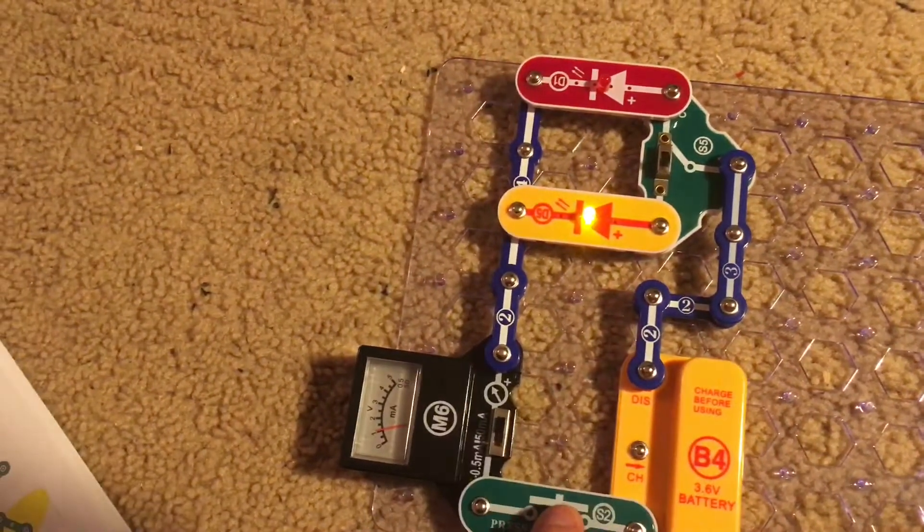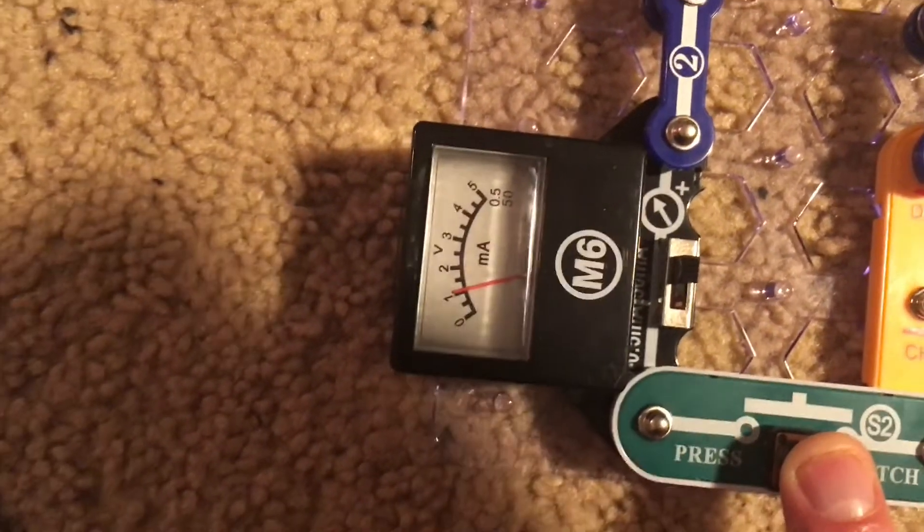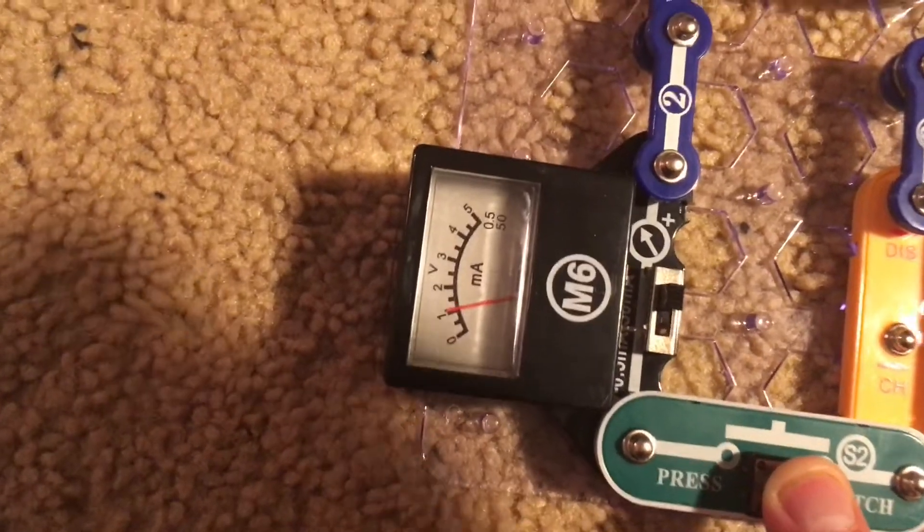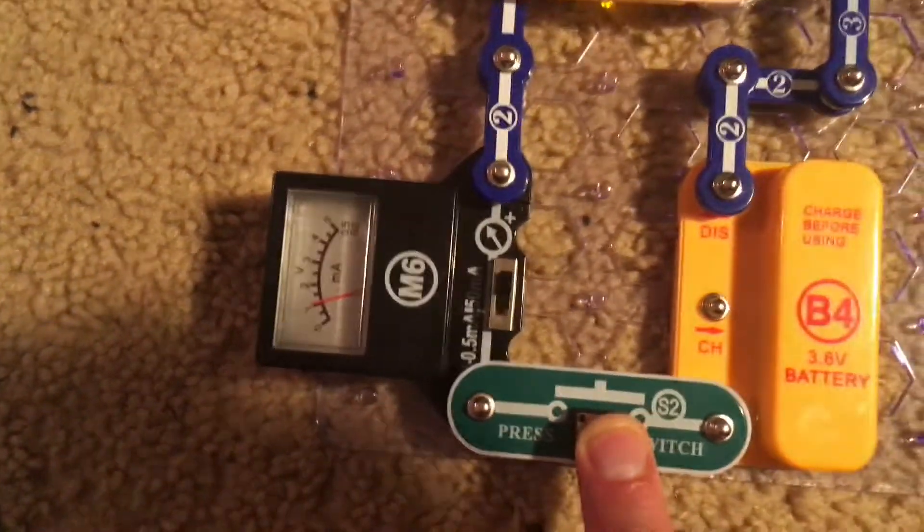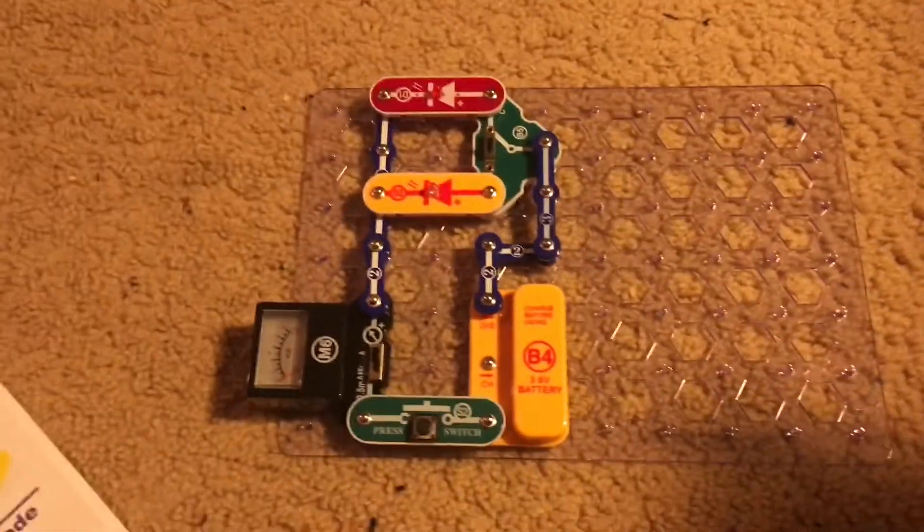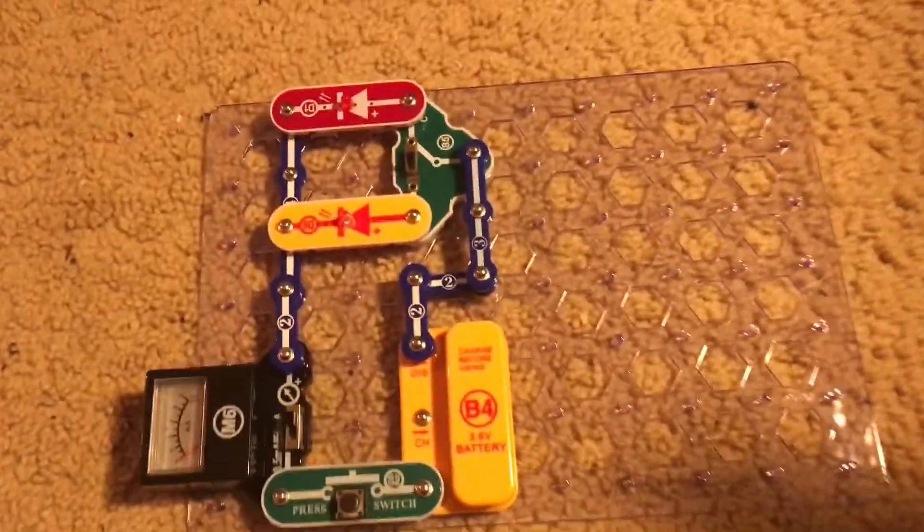And then holding on to the press switch, I am going to move the slide switch to the B position, and the yellow LED will light while the red one goes off. Now the meter has a much lower reading, just over 10 milliamps. The yellow LED uses a lot more energy than the red LED, but it is brighter.